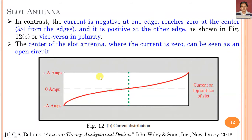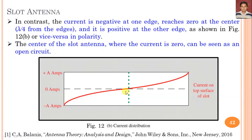In contrast, the current is negative at one edge (H1) and positive at the other edge. At the mid of the slot, the current is minimum — that is, current is zero — and this is termed as an open circuit element in the case of a slot antenna. The polarity of the current distribution may be changed depending on which edge is considered, but in both cases, at the center the current is zero.